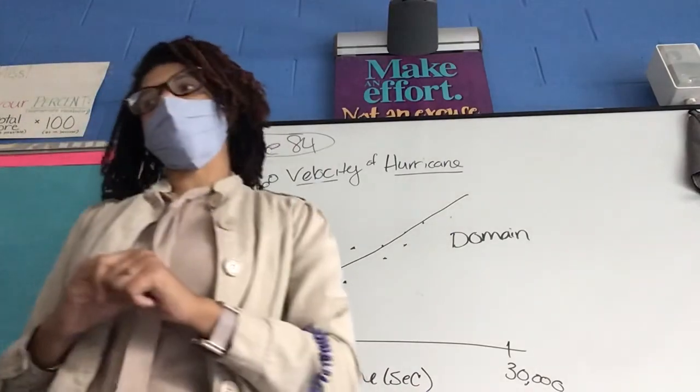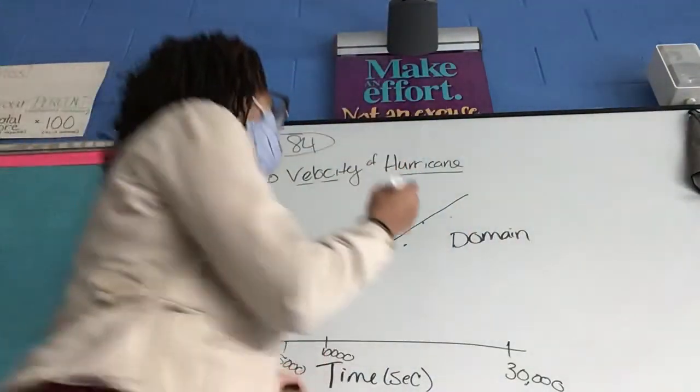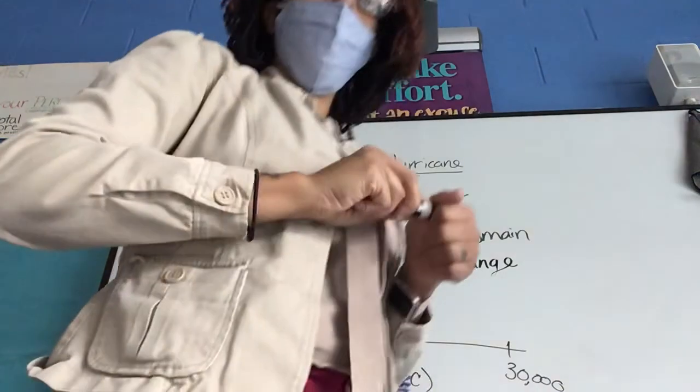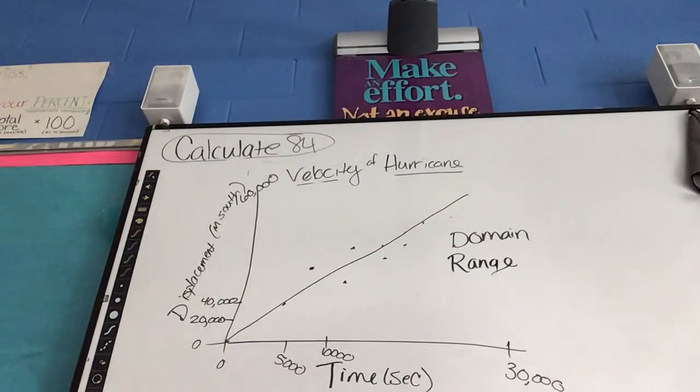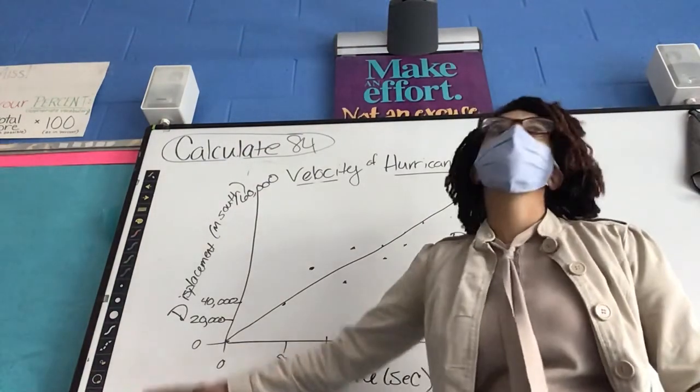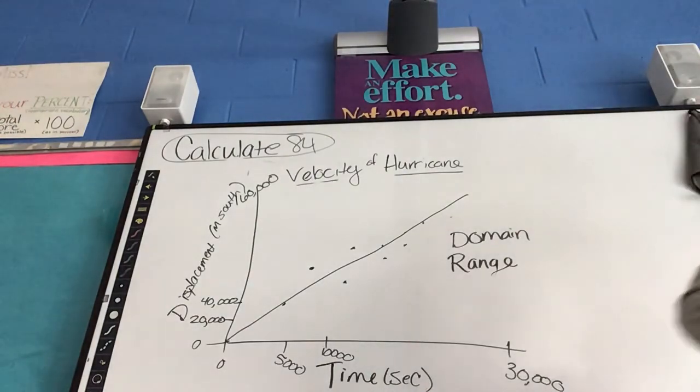Now, we're going to move to our range. Think about what you did for your domain. How do I do that same thing with my range? Let's start with what is my range? If my domain is time, what is my range? Displacement. Now, again, I know that displacement is not what you use often. Damage is another word for displacement. Damage. How much damage was done?